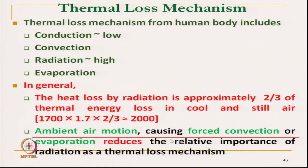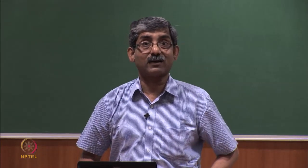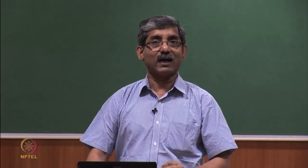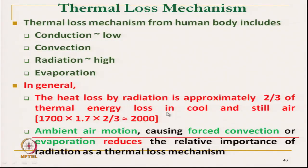Ambient air motion causing forced convection sometimes reduces the relative importance of radiative heat loss. In that case, if air is moving, the factor of 1.7 may become 1.5 or 1.4. The radiative heat loss will be lower relative to other heat loss mechanisms, but in normal conditions it is typically 2000 kilocalories.